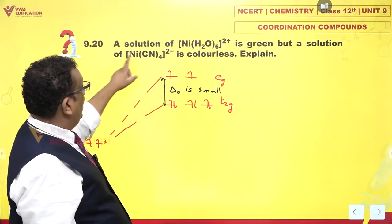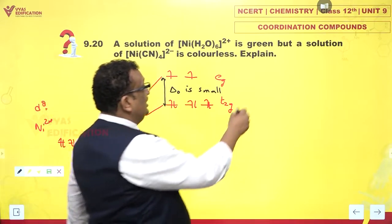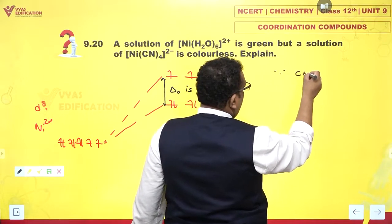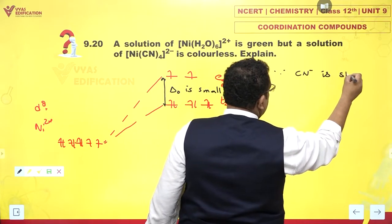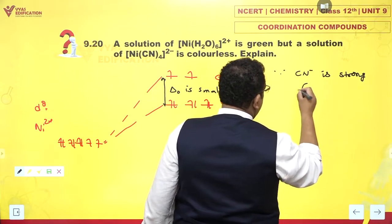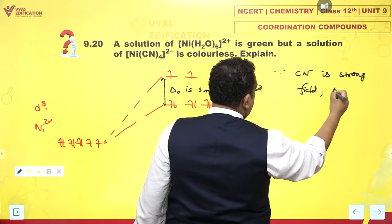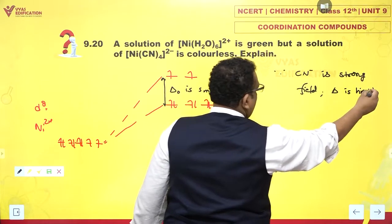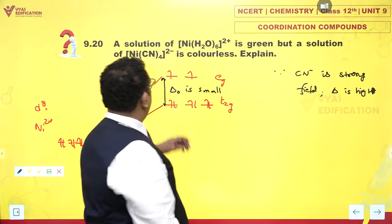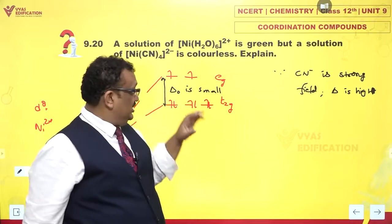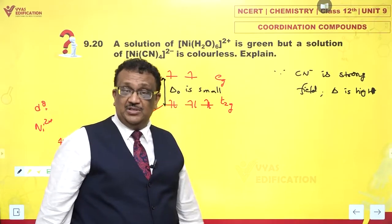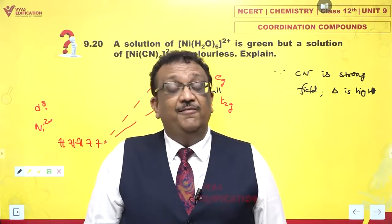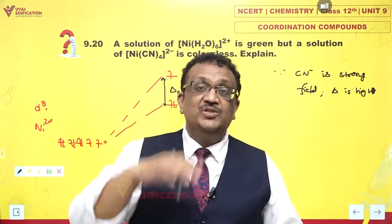But if you have Ni(CN)4 2-, since CN- is strong field, delta is high. Although geometry is different, this is simply a square planar complex. Splitting may not be exactly in the same pattern, but the fun part is, the gap is much higher.